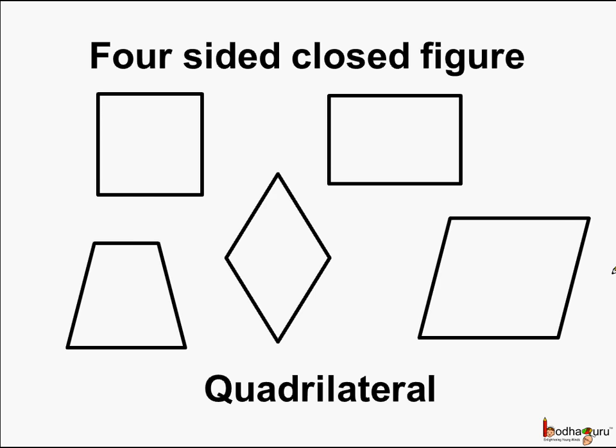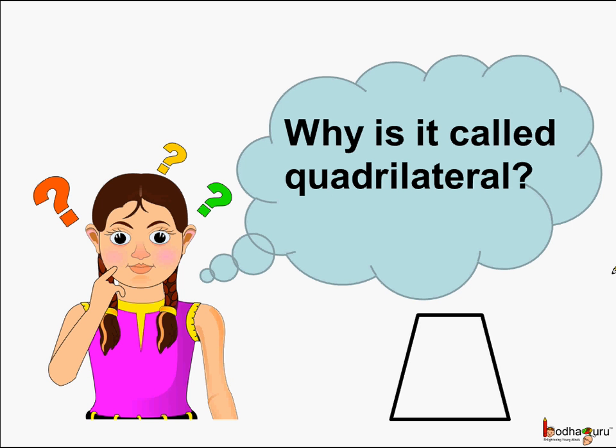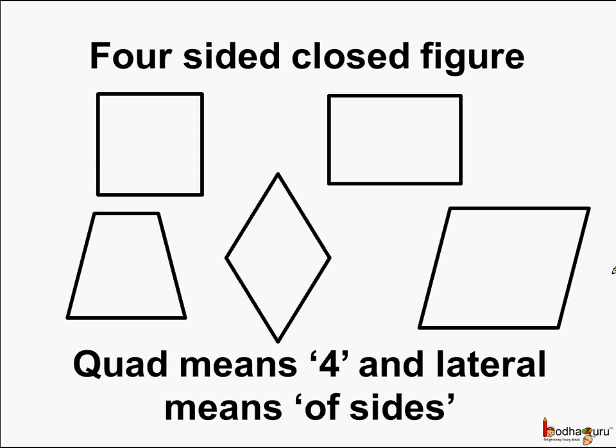Now you might say, why is it called a quadrilateral? This is because quad means four and lateral means of sides. So as we saw, this closed figure is made of four sides. Hence the name quadrilateral.